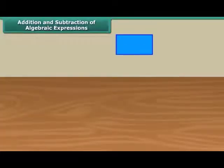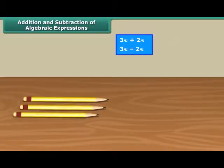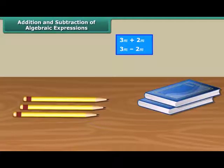We can only add or subtract like terms. But why is it so? Think of it like this. On a table, we have three pencils and two books. We cannot add the three pencils to the two books because they are not the same kind of objects.